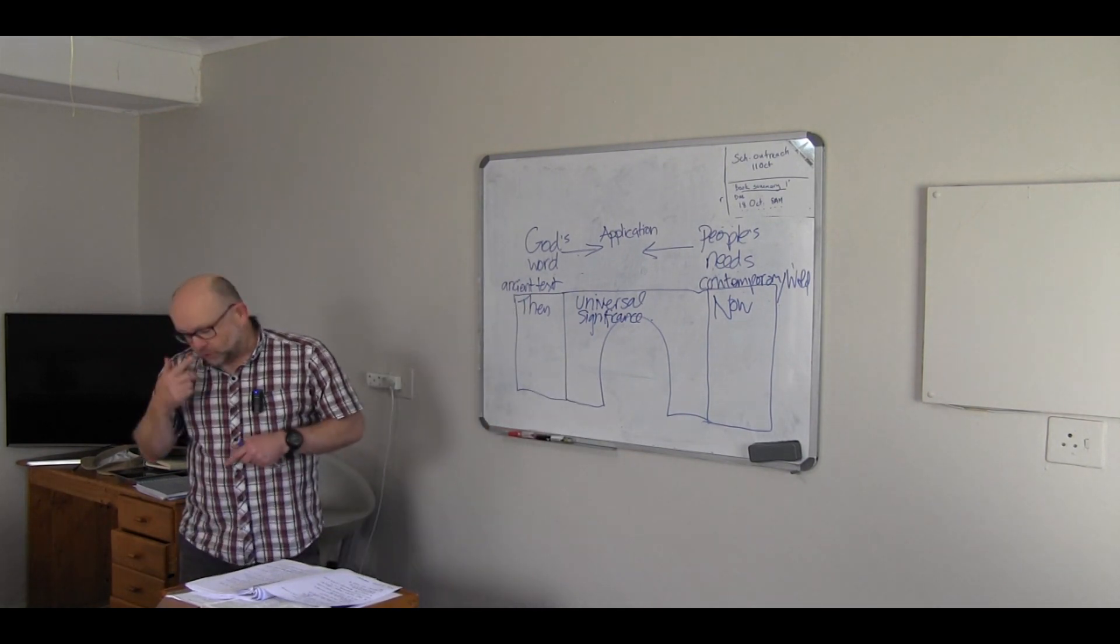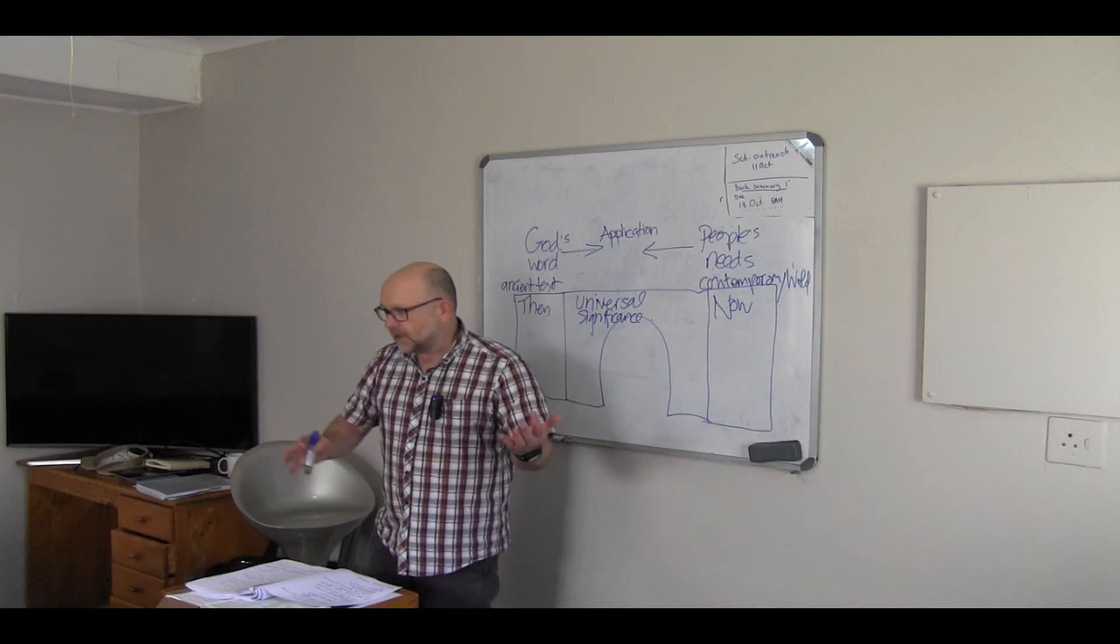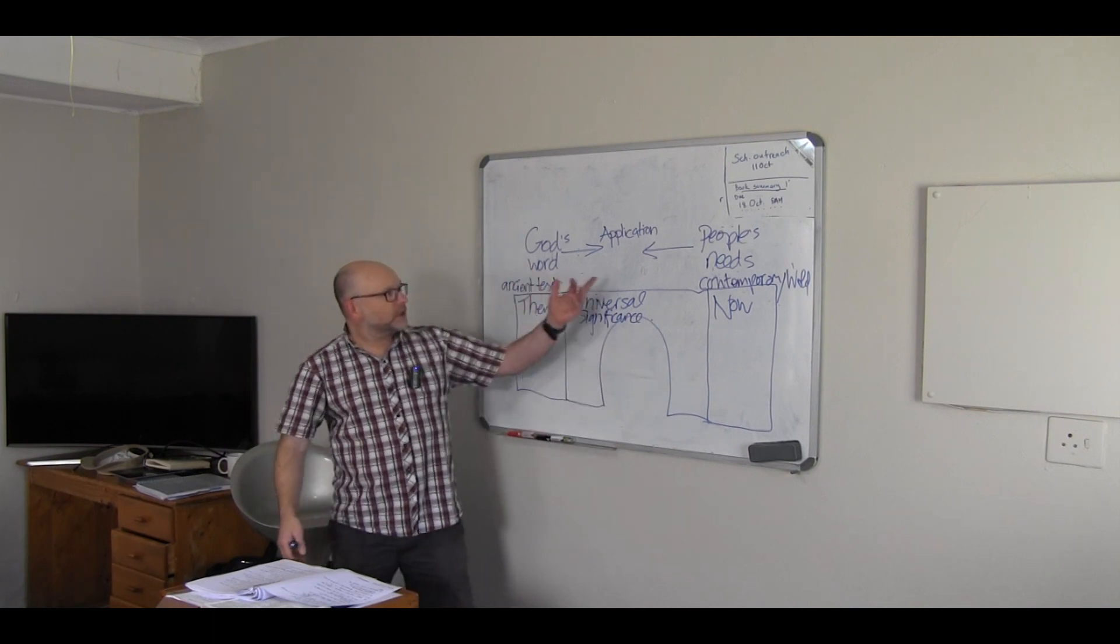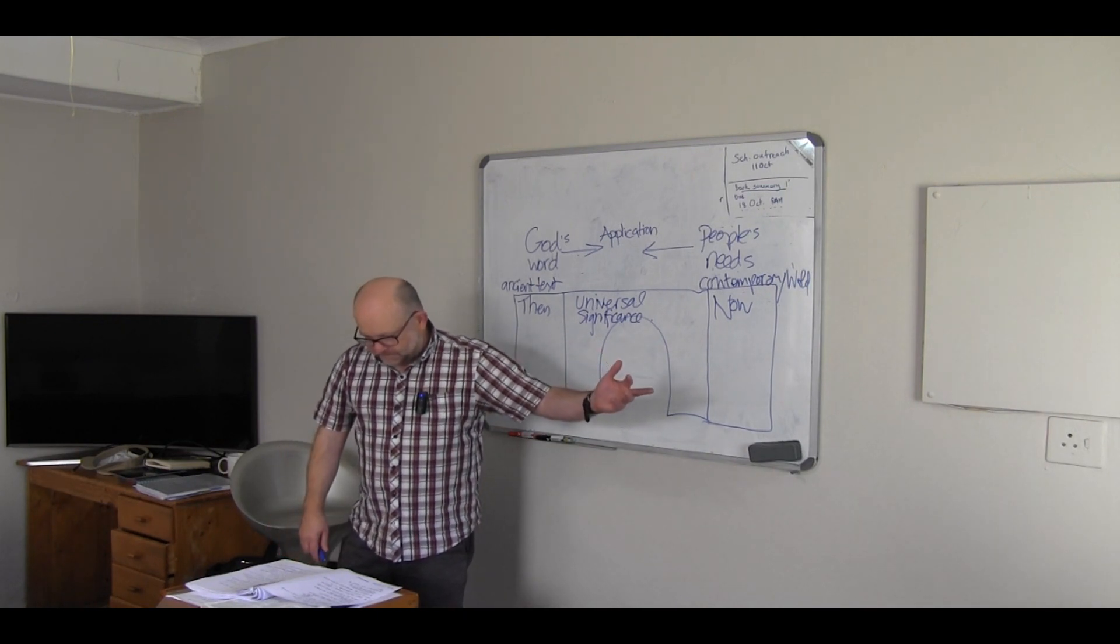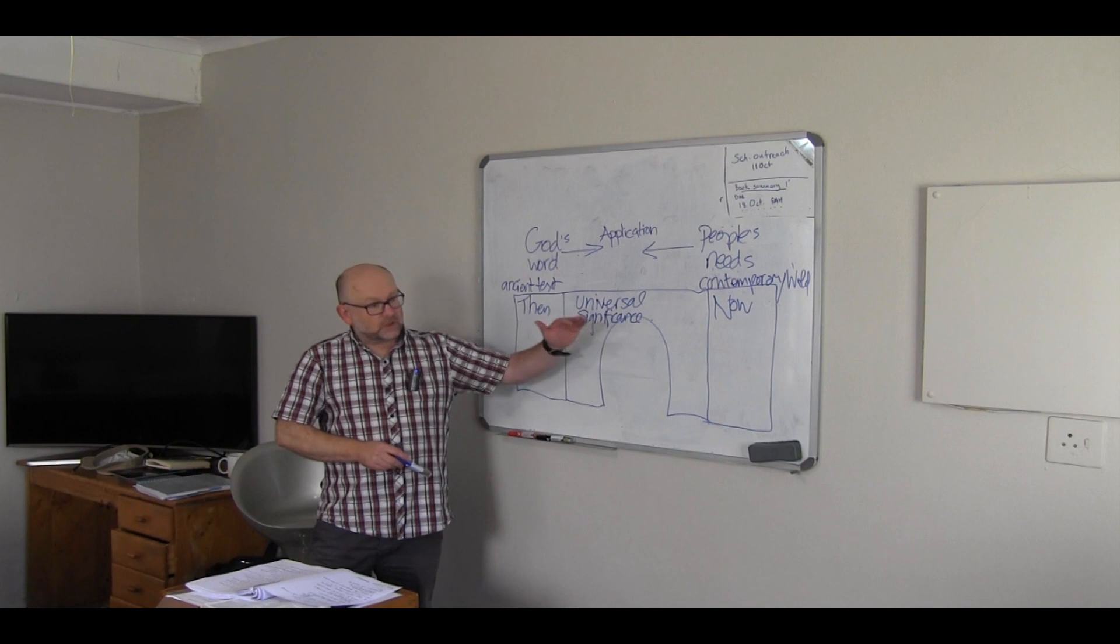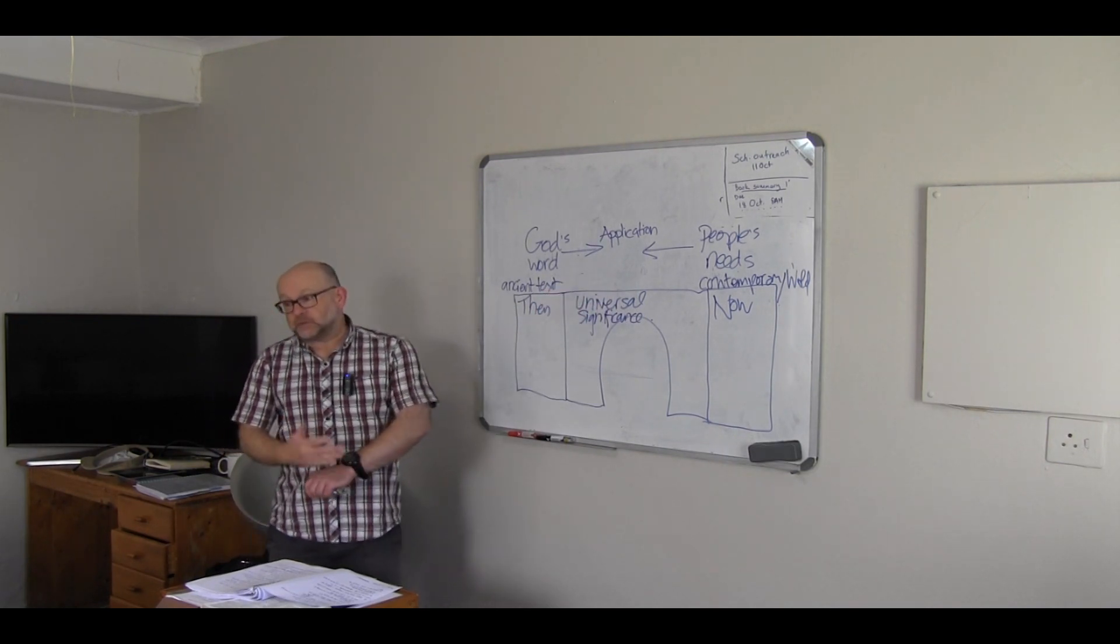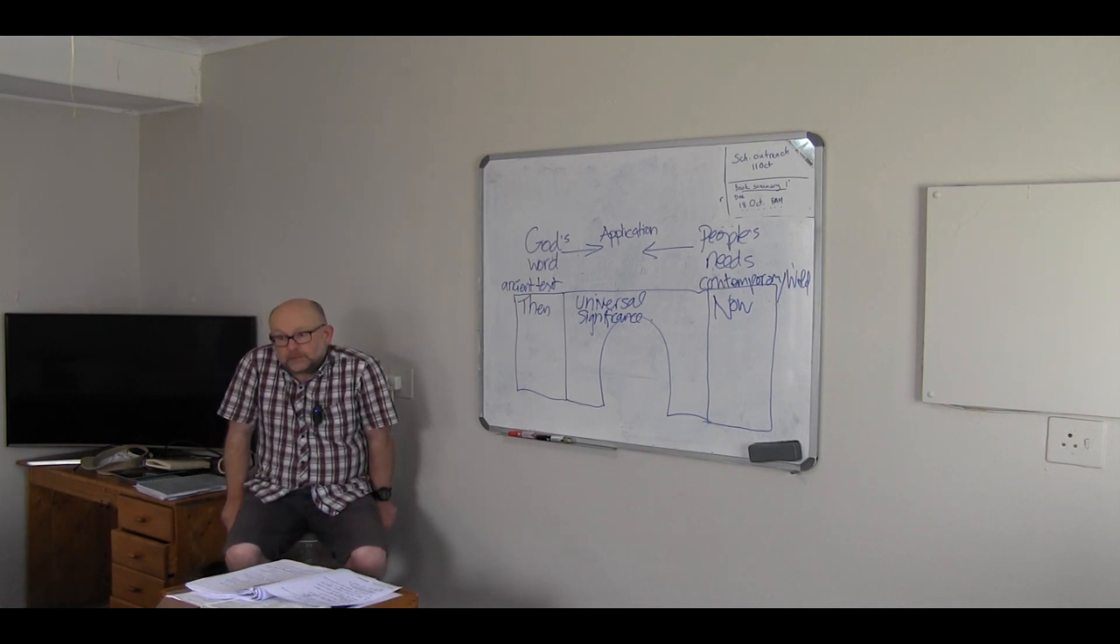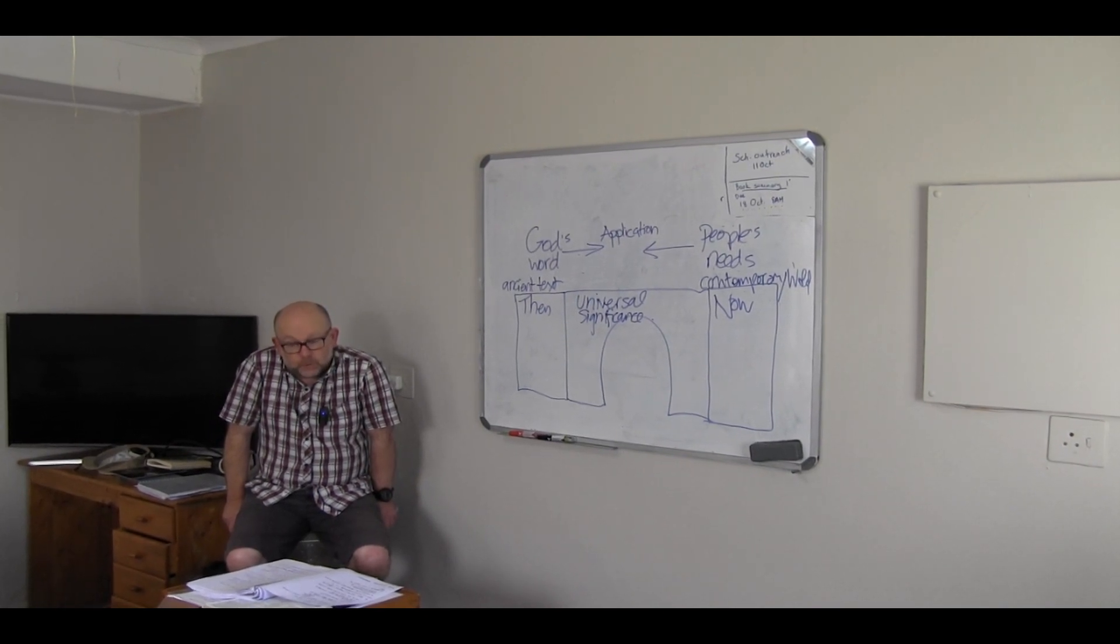John Stott in that book speaks about double listening. We read the Bible in one hand with the newspaper in the other. We're trying to bridge this gap. God's word, people's need together in application. What are some of the issues of our time? These are culturally specific. If you speak to young people in my culture, they would speak about the environment. Environmentalism is a big issue. Creation care, one of the big issues of our times. Issues to do with poverty, social justice, issues of our time.